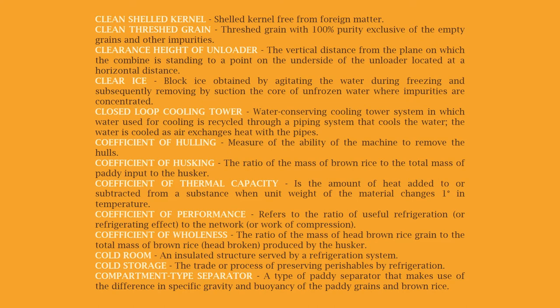Coefficient of hulling: a measure of the ability of the machine to remove the hulls. Coefficient of husking: the ratio of the mass of brown rice to the total mass of paddy input to the husker. Coefficient of thermal capacity: the amount of heat added to or subtracted from a substance when a unit weight of the material changes one degree in temperature.